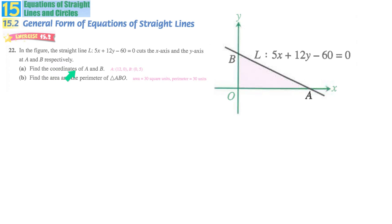In this question, we have to find the coordinates of A and B. At point A, it's obvious that the y coordinate is 0. The problem is what is x.